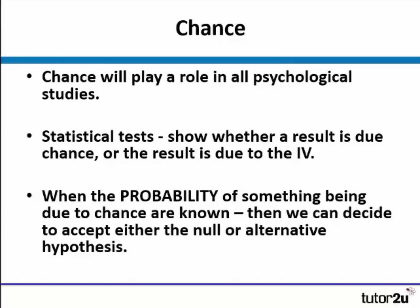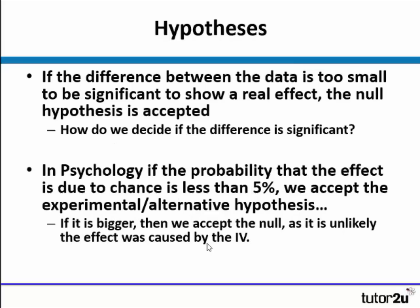When we know the probability of something being due to chance, we can decide either to accept the null or accept our alternative hypothesis. If the difference in our data is too small to be significant, the null hypothesis is accepted. Usually, we would accept something if the probability of it being due to chance is less than 5%. If that probability is less than 5%, we accept our alternative hypothesis and reject the null. If it's bigger than 5%, we accept the null, as it's unlikely the effect was caused by the IV and more likely due to chance.